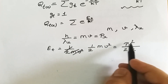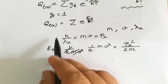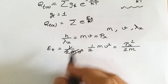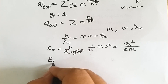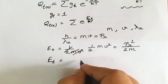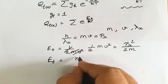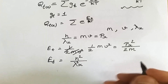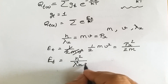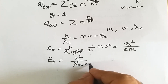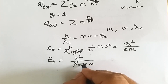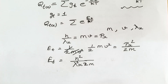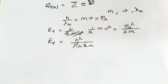When we substitute the value of p_x squared — replacing it using de Broglie's relation — our energy e_t becomes h squared upon lambda_x squared, divided by 2m. This is the energy associated with the wave.